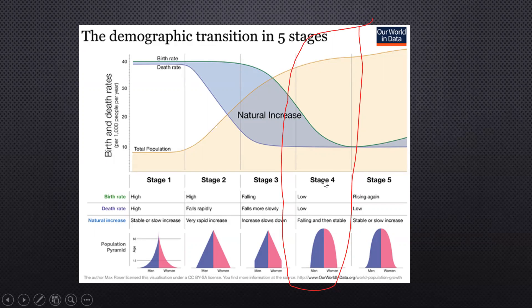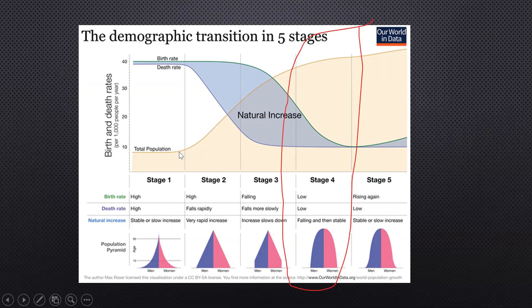These policies help countries maintain their population and keep the dependency ratio lower. You want to avoid a high dependency ratio — you don't want a small working-age population supporting a majority of young or older dependents.